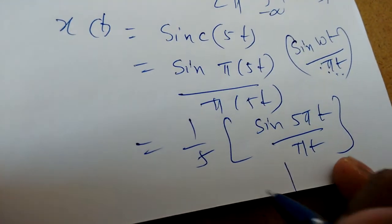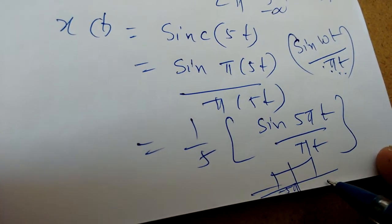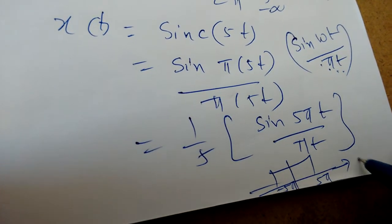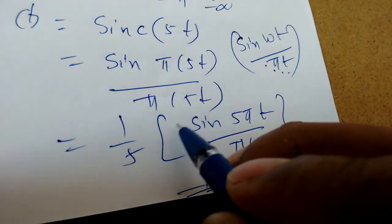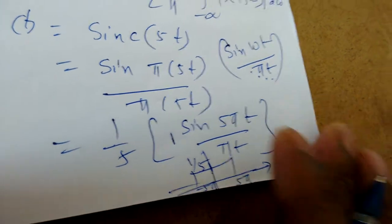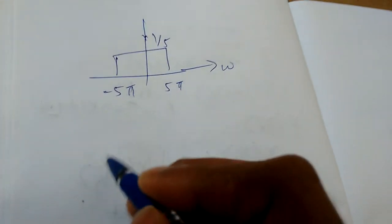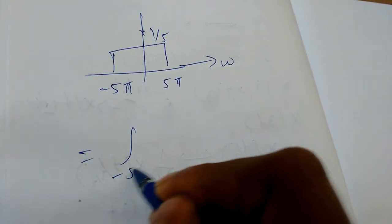If we write sinc(5t) = sin(5πt)/(5πt), then the Fourier transform of sin(Wt)/(πt) is a rectangle from −W to W. With W = 5π, the Fourier transform has magnitude 1/5, and it spans from −5π to 5π in the ω domain.